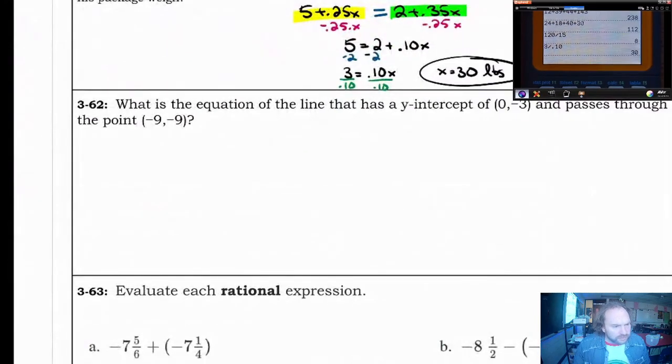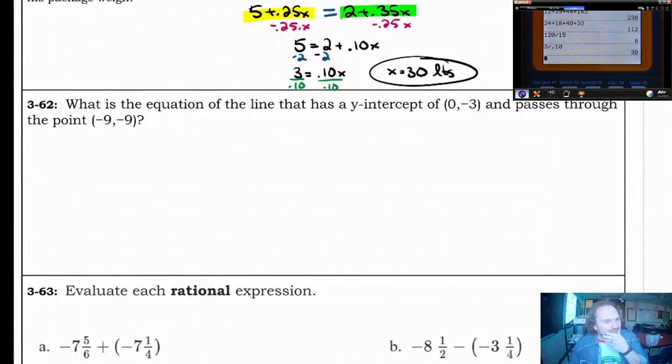Question 362 is reviewing your algebra 1 days. What is the equation of the line that has a y-intercept at 0, negative 3, and passes through the point negative 9, negative 9? Well, they told us that the y-intercept is going to be 0, negative 3. So that's going to be your b in this equation. So b is going to equal negative 3. We kind of know that.